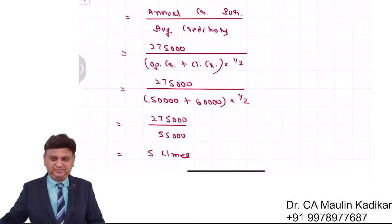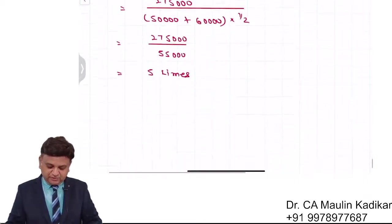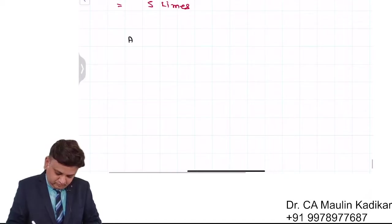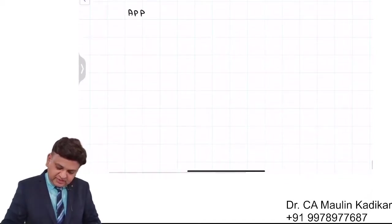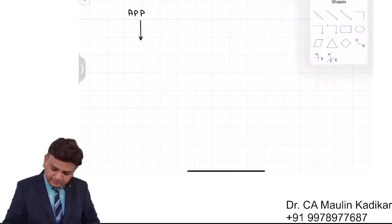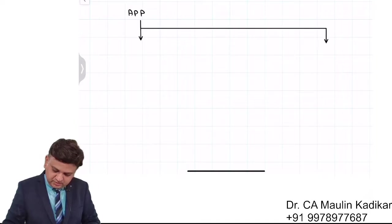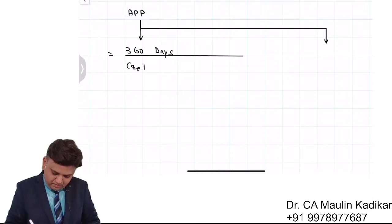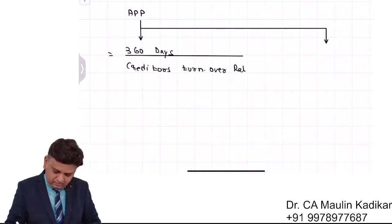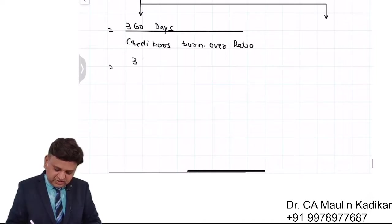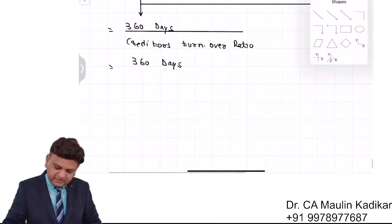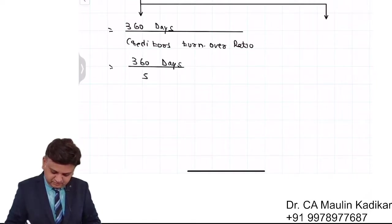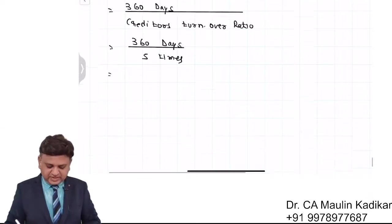Please write the answer. Next is average payment period. In that, once again there are two methods by which you can do the answer. In the first method, it is 360 days divided by creditors turnover ratio - 360 days divided by 5 times. So the answer is 72 days.